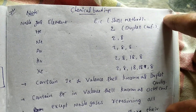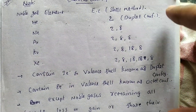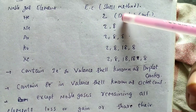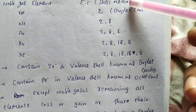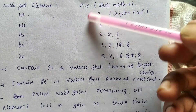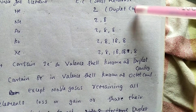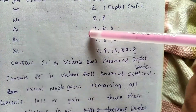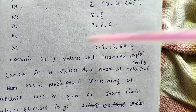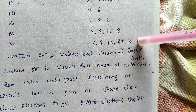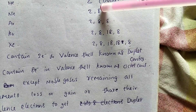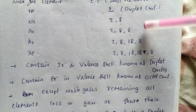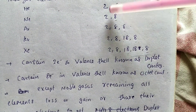Formation of ionic bond. First, noble gas elements configuration — helium, using the shell method representation. Helium contains two electrons, known as duplette configuration. Neon: 2,8; argon: 2,8,8; krypton: 2,8,8,8; xenon: 2,8,18,8,8. All these elements contain eight electrons in the valence shell and are stable, known as octet configuration. Two electrons in the valence shell is known as duplette configuration.